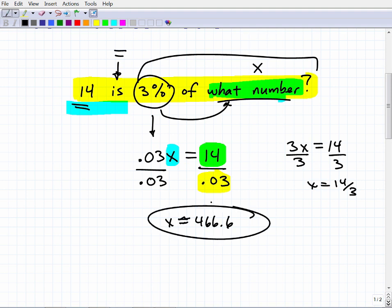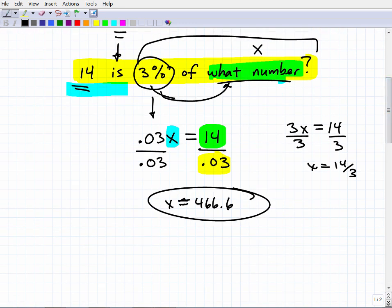OK, so that's our answer. Now, if we wanted to test our answer, we'd say, OK, 3% of what number is 14? Well, all right, is 0.03 or 3% of 466.6. What is that in our calculator? So let me see 0.03 times 466.6.